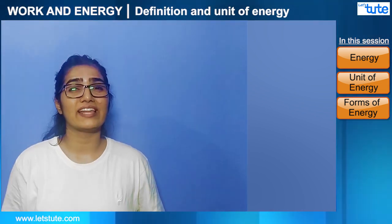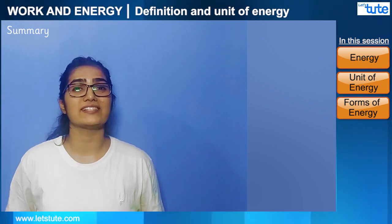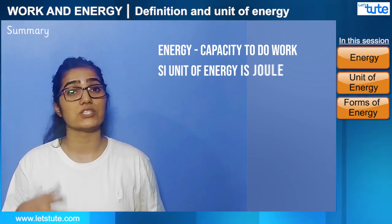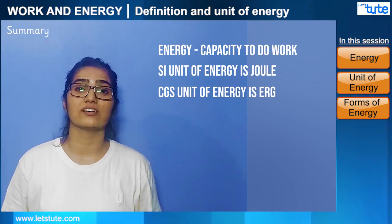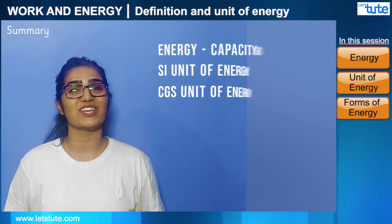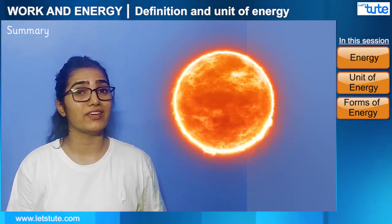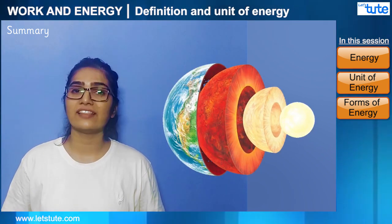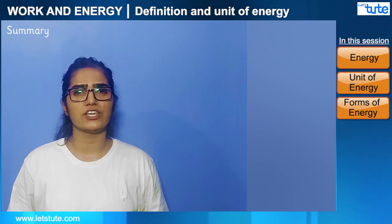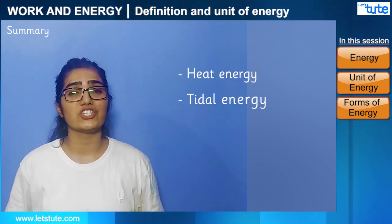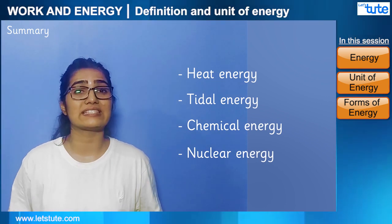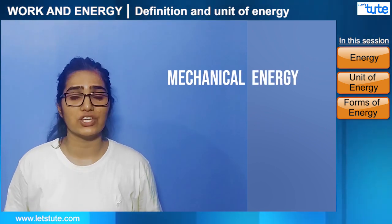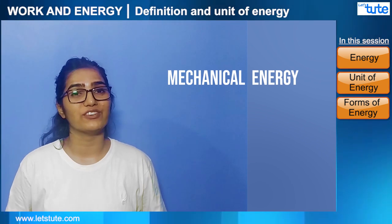Let's do a quick recap of today's lecture. Energy is defined as the capacity to do work. The SI unit of energy is joule and the CGS unit is erg. The biggest source of energy is the sun, but we can also get energy from the interior of the earth and from tides. Different forms of energy include heat energy, tidal energy, chemical energy, and nuclear energy. The next topic we'll cover is mechanical energy.